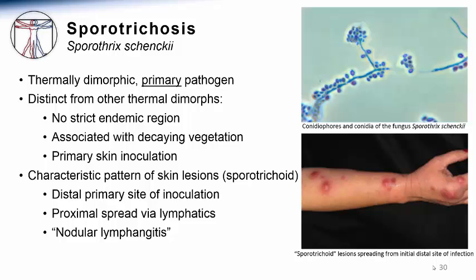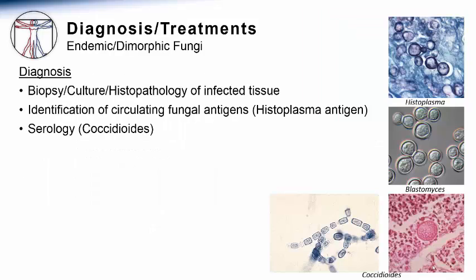Sporothrix is not the only infection that can spread in this manner — atypical mycobacteria or Nocardia can also spread like this — but it is very characteristic for sporotrichosis. Once these infections are considered, how are they diagnosed? Obviously, if the infected tissue is biopsied, the organisms can either be seen by histopathology or perhaps cultured from the tissue.